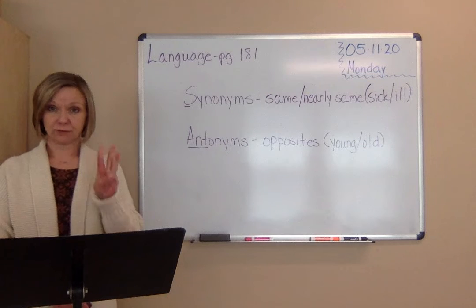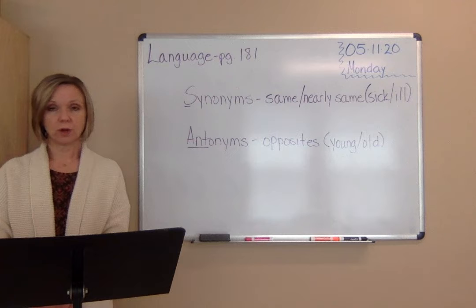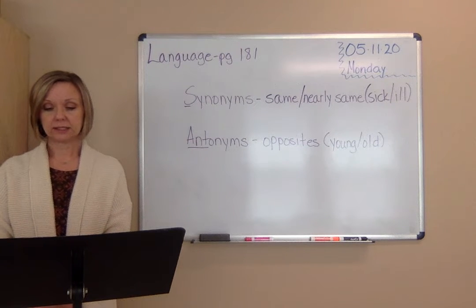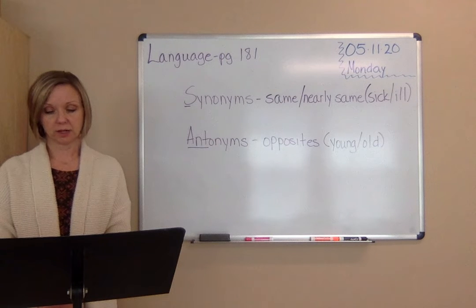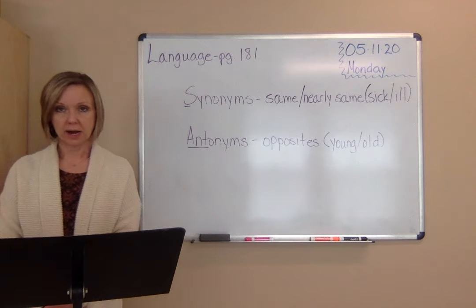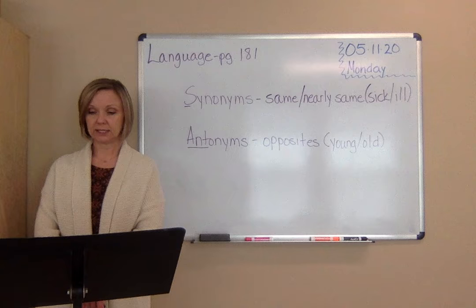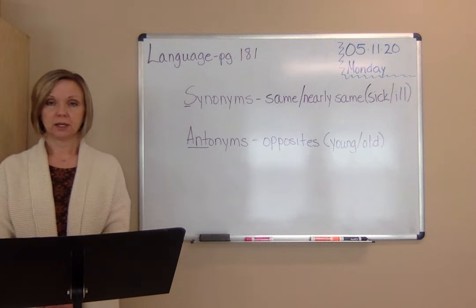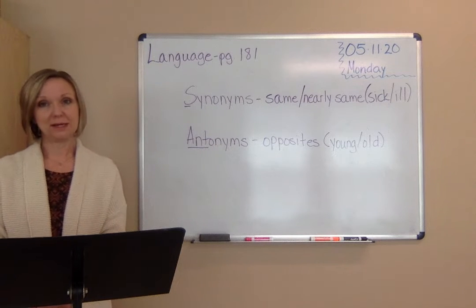Two — these have three different meanings. T-W-O is the number two. T-O-O means also. And T-O is used when T-O-O and T-W-O are not correct. Write: R-I-G-H-T is a direction. W-R-I-T-E means to make letters, numbers, and words. They sound alike but have different meanings and are spelled differently.